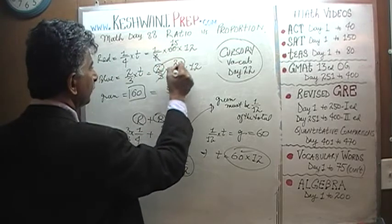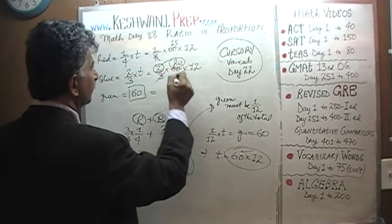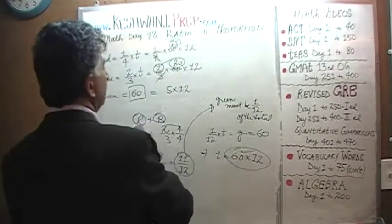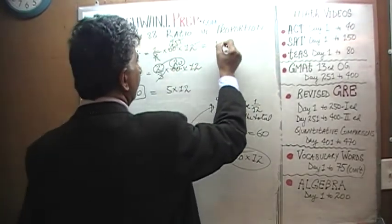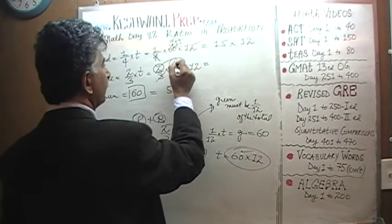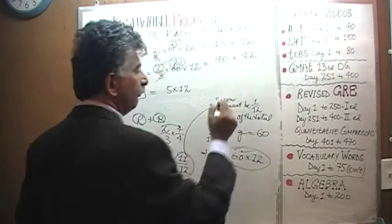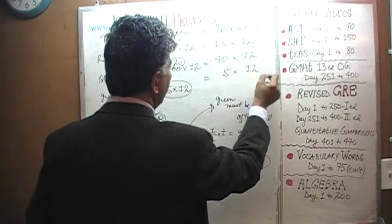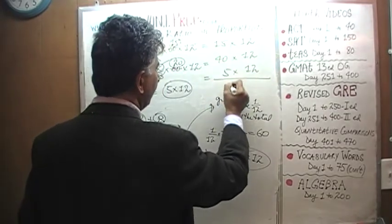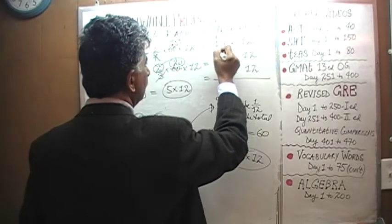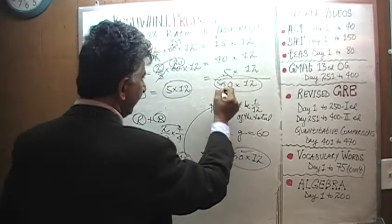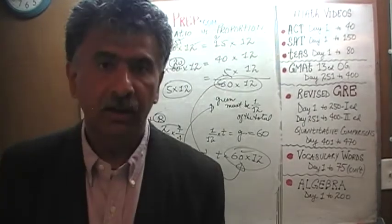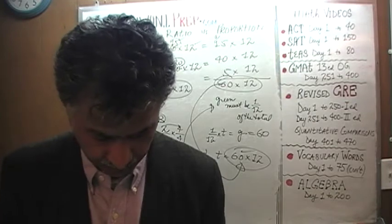So here, don't forget this two here, two times twenty which is forty. Forty times twelve, five times twelve and fifteen times twelve. And if we were to add them all up, fifteen times twelve plus two times twenty which is forty times twelve for the blue. And the green is simply five times twelve. And if we were to add them all up, we will end up with five plus five which is ten, zero. Carry one. One plus one is two. Two plus four is sixty. Sixty times twelve is exactly what we had claimed the total to be. Which means our answer must be correct.